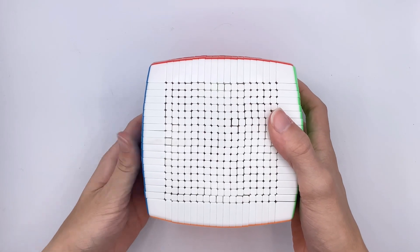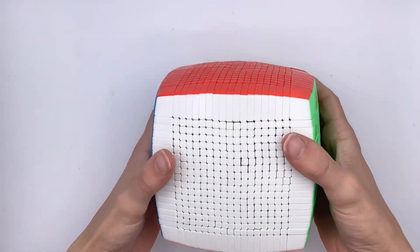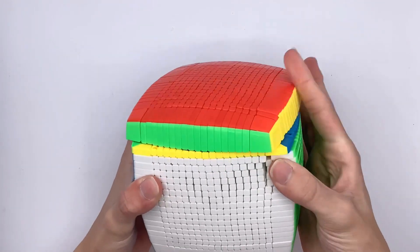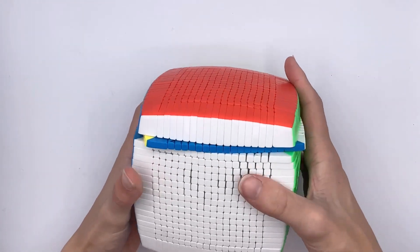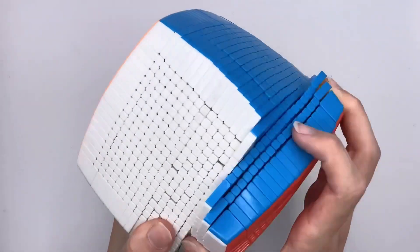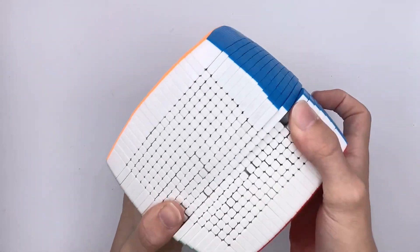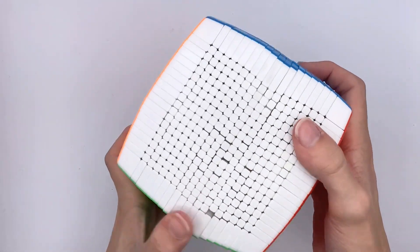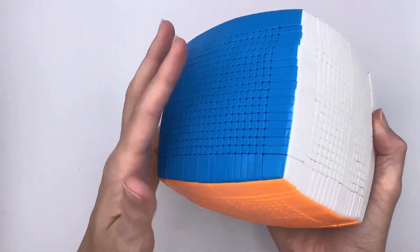Alright, so now that the cube's all dried up, let's get into first turns. Alright, not bad. The inner layers don't feel much different either. Yeah, the turning on this cube isn't bad at all.